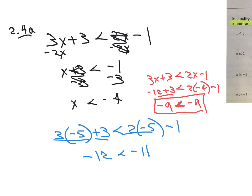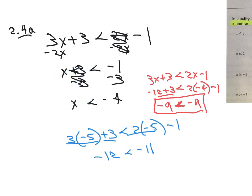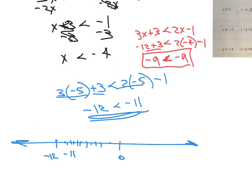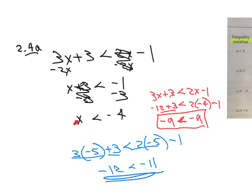Even though that doesn't look like it's true, if we had a number line, we would see that negative 12 is further away from 0, so negative 12 is less than negative 11. That makes it a true statement. Any number where x is less than negative 4 is going to make a true statement. In fact, x could be negative 4.0001 — as long as it's smaller than negative 4, it will work.